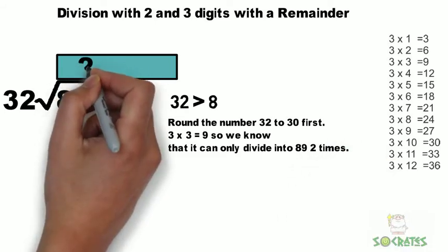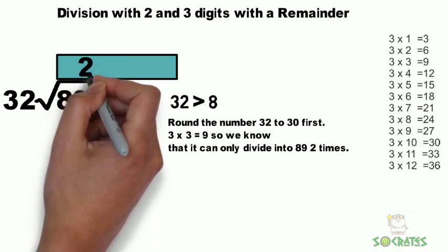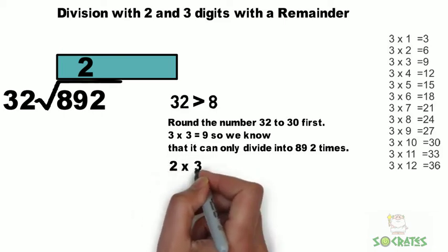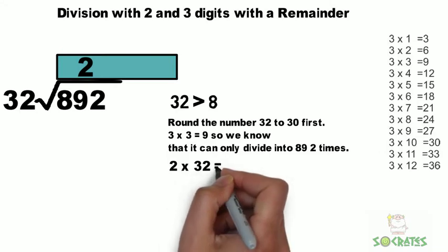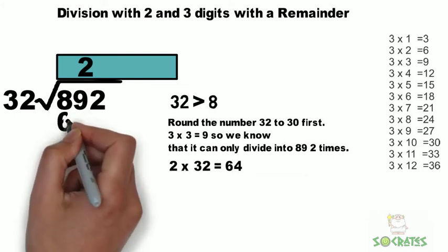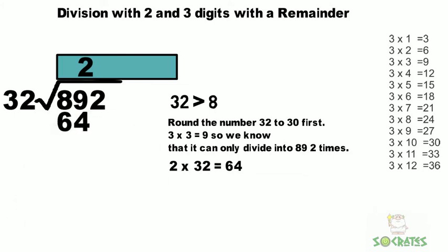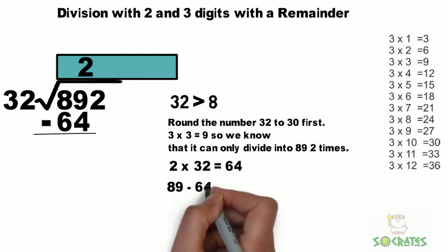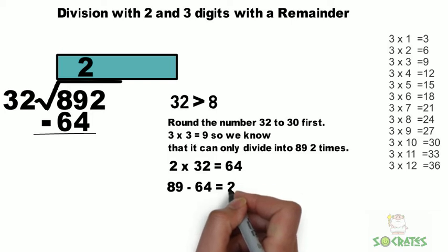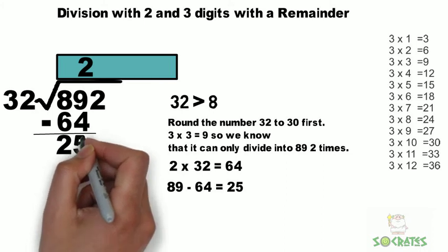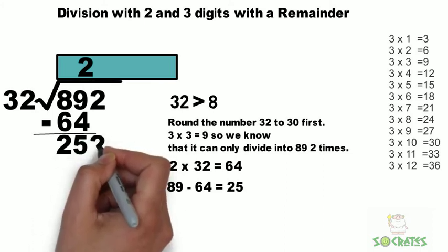So 2 times 32, well that is going to equal 64. Next we subtract 64 from 89. Once we subtract 64 from 89, that's going to leave us with 25. Then we need to bring the 2 down for 252.